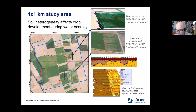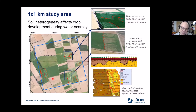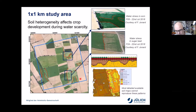Ever since this PhD, I see these patterns everywhere when sitting in a plane — it's fascinating. Often you see these patterns of soil heterogeneity affecting crop productivity. Even for this one-square-kilometer area, the most detailed available soil maps do not reproduce this soil heterogeneity — it's simply not reflected in soil maps.